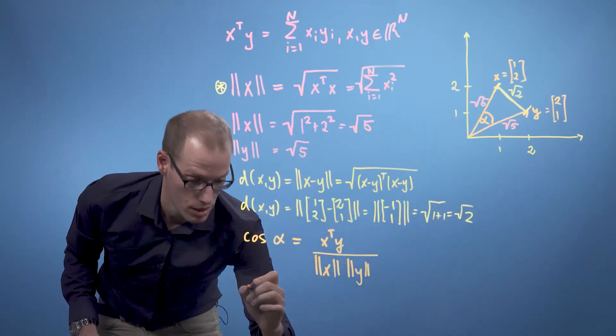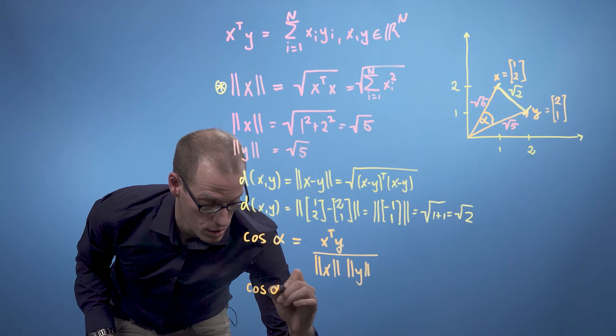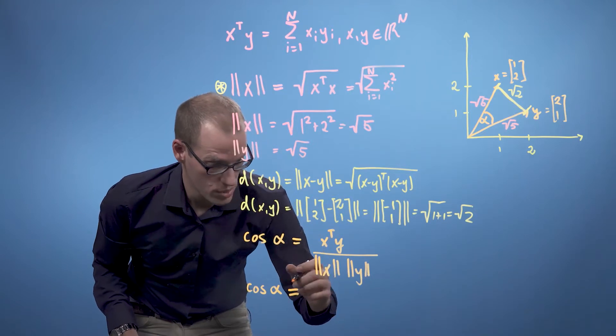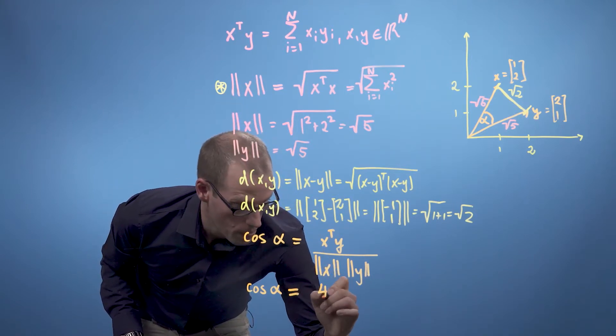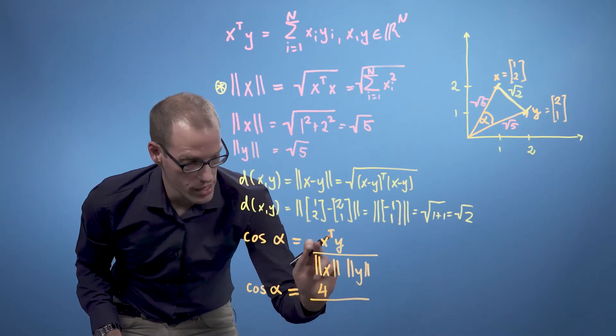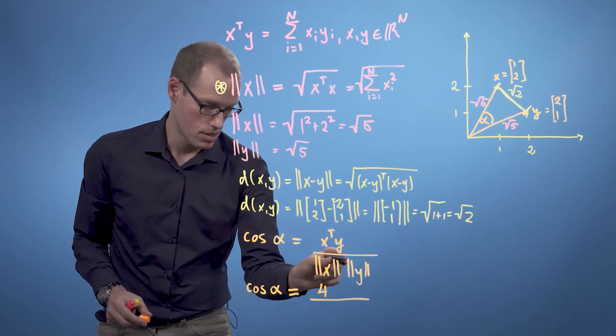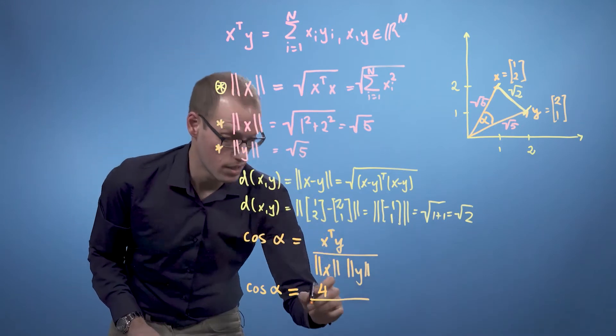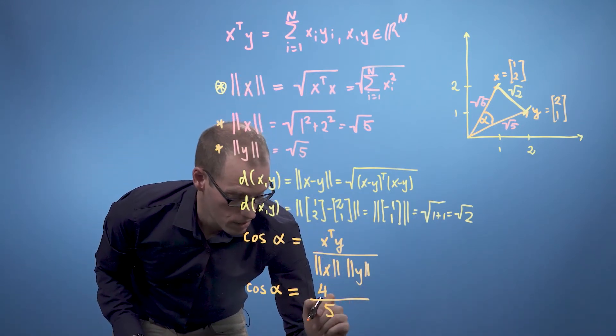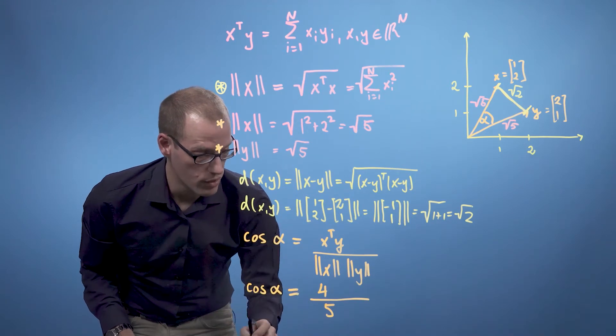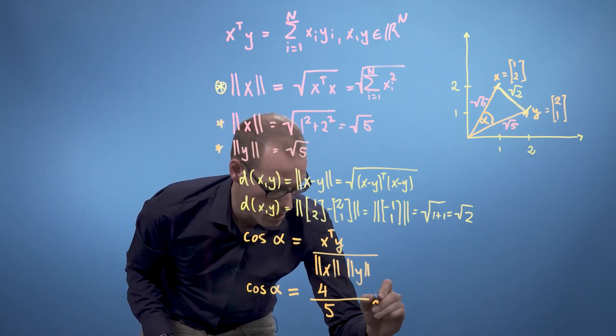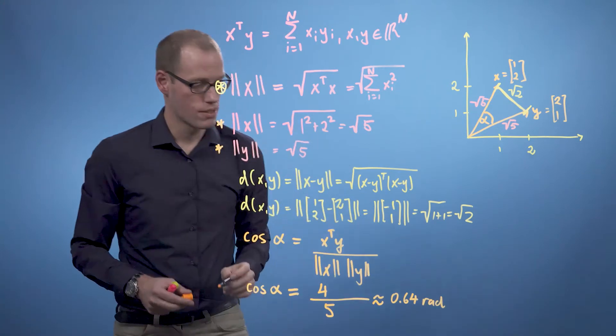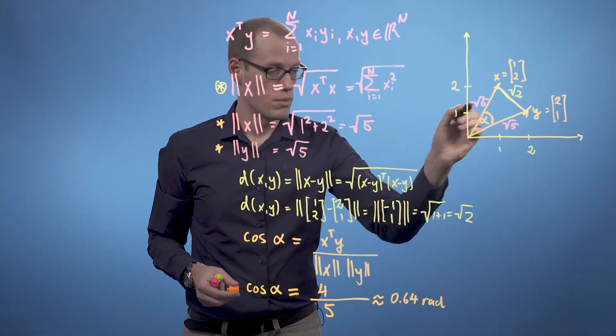And in our example over here, we'll get that the cosine of the angle between x and y is x transpose times y, which is 4, divided by the length of x times the length of y. But we've done these computations already, which come from here. So it's square root 5 in any case. So therefore, we get the cosine alpha is 4 over 5, which corresponds to approximately 0.64 radians. And that is our angle alpha between these two vectors.